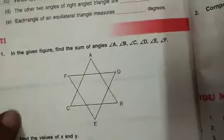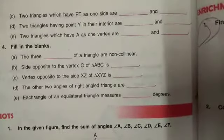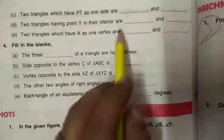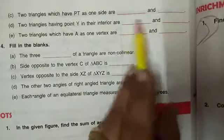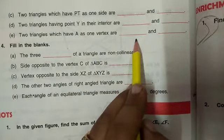Next, part number C: Two triangles which have PT as one side are blank and blank. I hope now you can solve these three parts yourself. Very simple questions are given there.